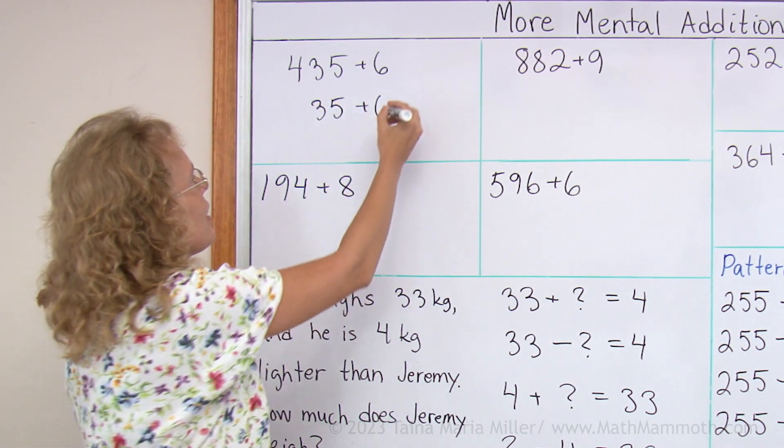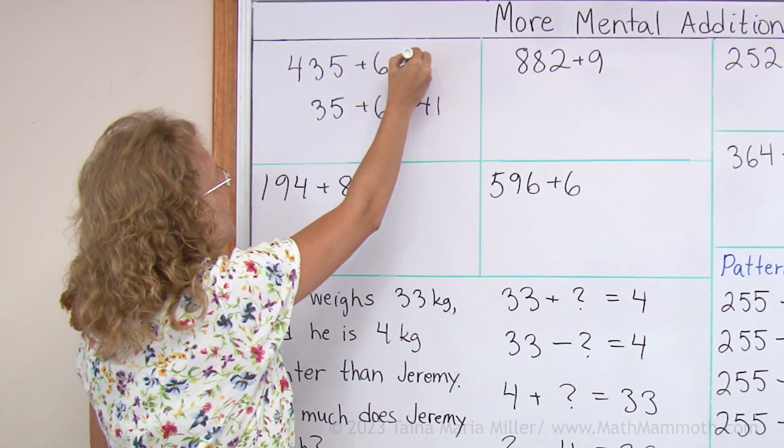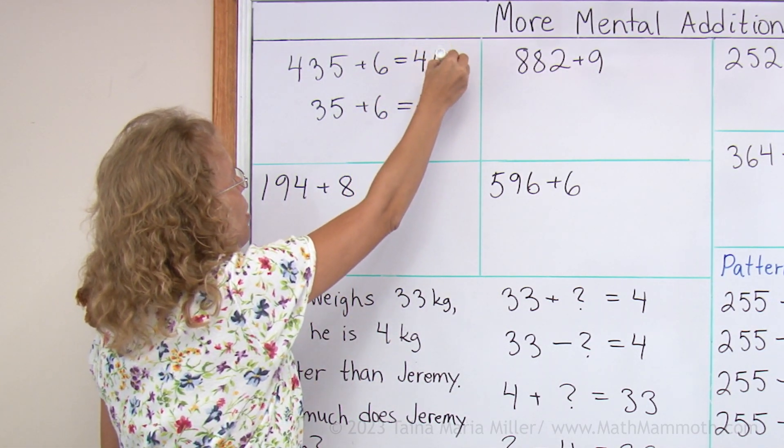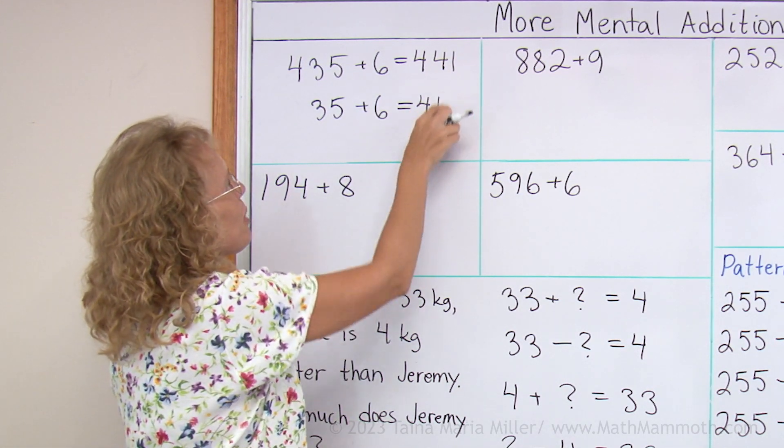And now that is, as you should know, 41. So then this one is just 441. It just has the 400 there. So that's the only difference between these two.